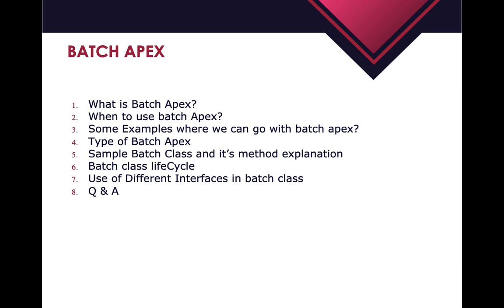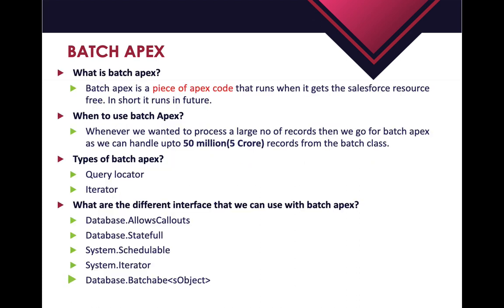Batch Apex is a piece of code that gets executed in a future whenever our Salesforce resources are free. We can say inside the Batch Apex the code runs in a future and we can process data in bulk. We can process up to 50 million records in a single batch, which is equivalent to 5 crores.